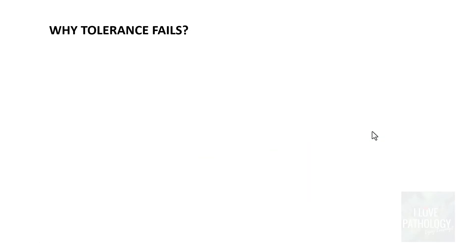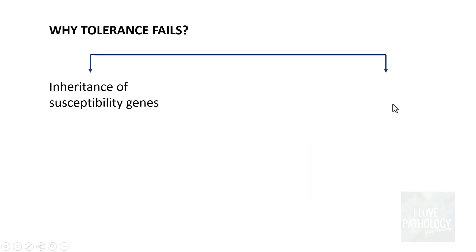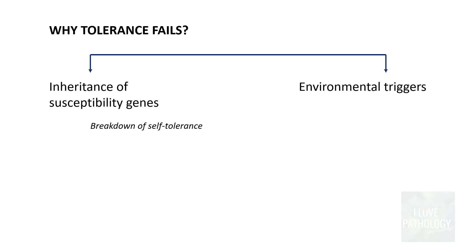So the question is: why does this tolerance fail? The reasons are: one, inheritance of susceptibility genes, which basically breaks down self-tolerance mechanisms; and two, environmental triggers, which could be infections and tissue damage due to any cause.